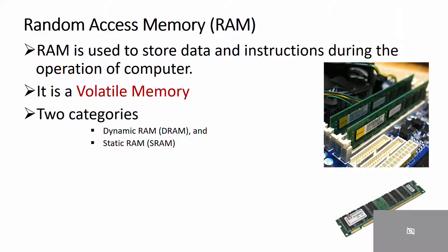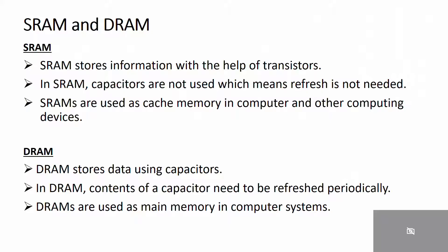There are two categories of RAM depending on the technology used to construct RAM: SRAM and DRAM. SRAM stands for Static Random Access Memory and DRAM stands for Dynamic Random Access Memory.